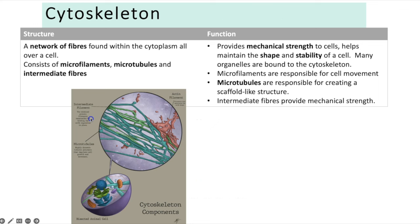The cytoskeleton is a network of fibres found throughout the cytoplasm of a cell, consisting of microfilaments, microtubules and intermediate fibres. It provides mechanical strength to cells, helps maintain shape and stability, and many organelles are bound to it. Microfilaments are responsible for cell movement; microtubules create a scaffold-like structure; and intermediate fibres provide mechanical strength.